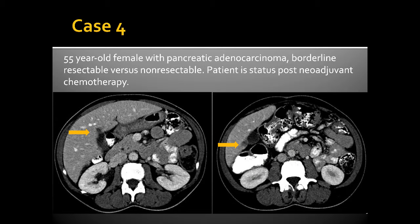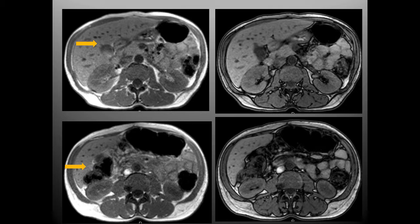Case 4 is a 55-year-old female with pancreatic adenocarcinoma referred to an academic center for MRI to determine if she is borderline or non-resectable after neoadjuvant chemotherapy. The radiologist reviewing the current MRI also reviews a prior CT from several months before and identifies two liver lesions not described by the outside radiologist — a common scenario where subtle liver metastases are missed. However, on the MRI, these areas are bright on in-phase sequences and lose signal on out-of-phase sequences, meaning they represent focal fat, not liver metastases.